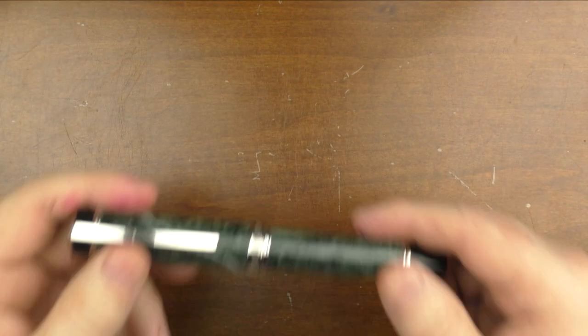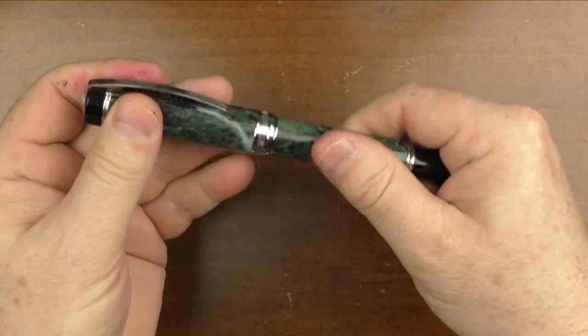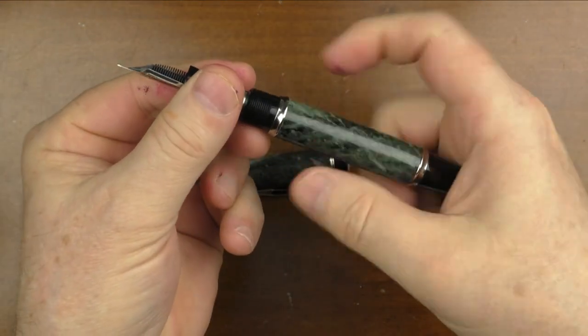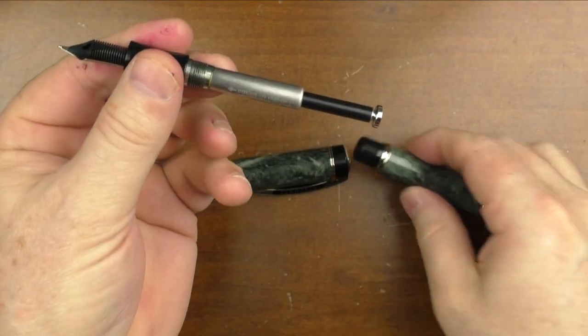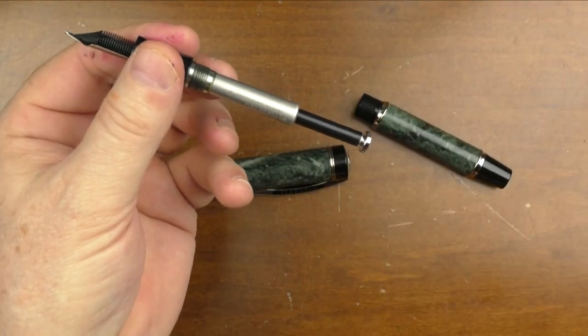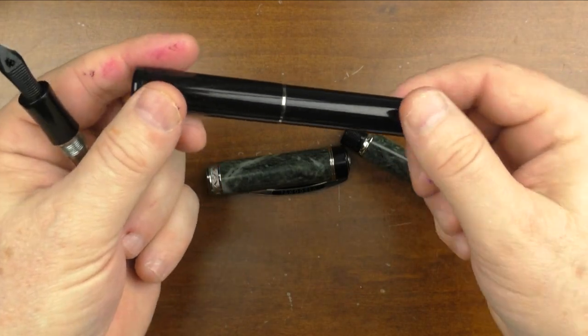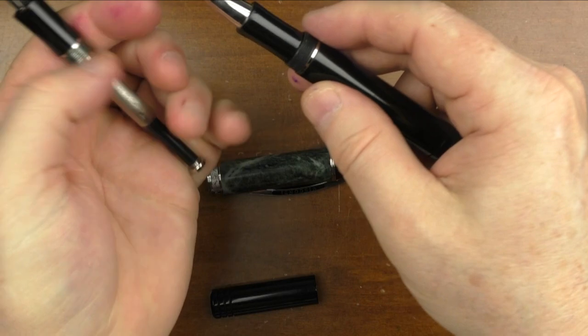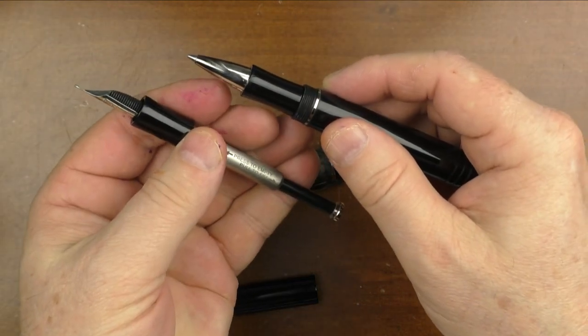Now, I have another pen which converts from a fountain to a rollerball, and that would be the Visconti Millionaire. I realize that these pens are in significantly different price ranges, but with this particular pen, it actually comes with a little tube that you see here where you could store the rollerball or fountain pen section when they are not in use.